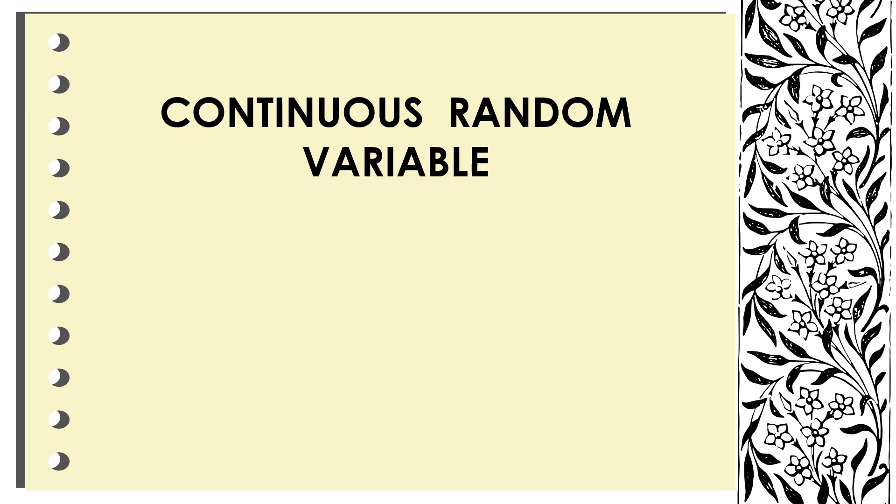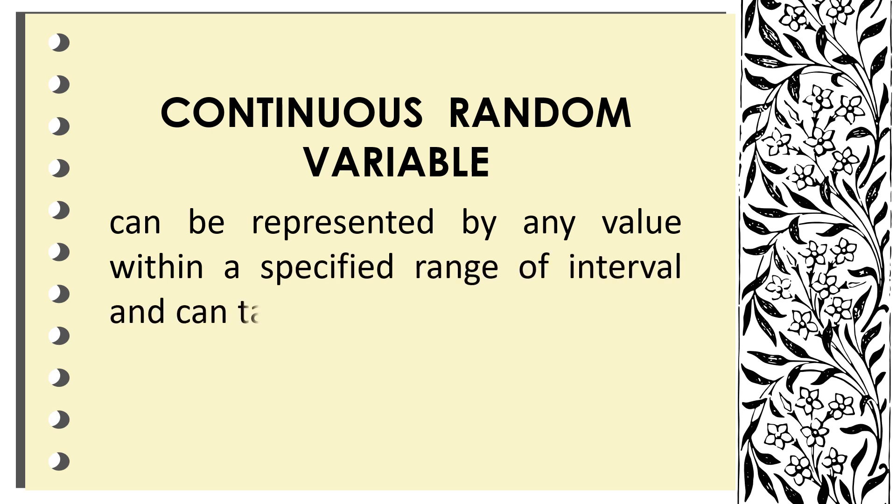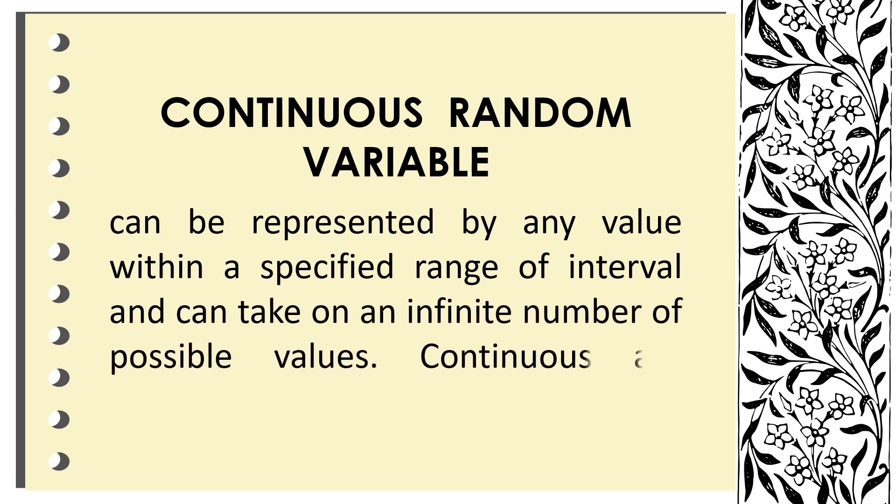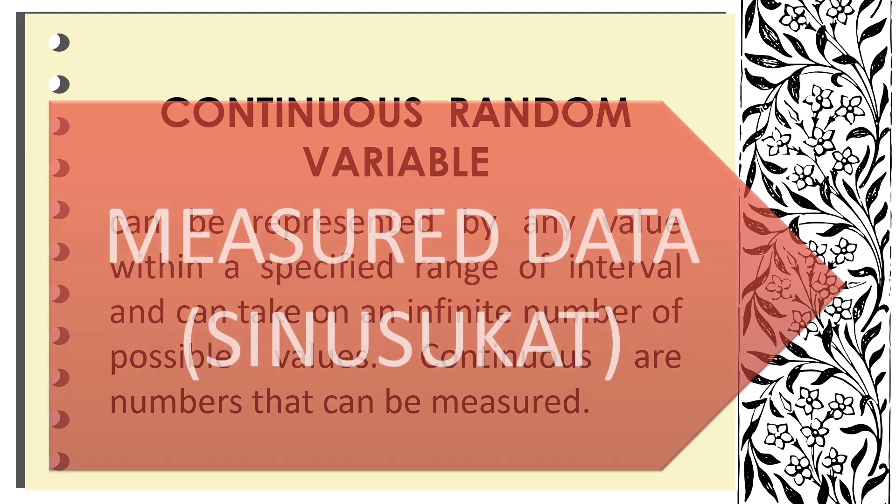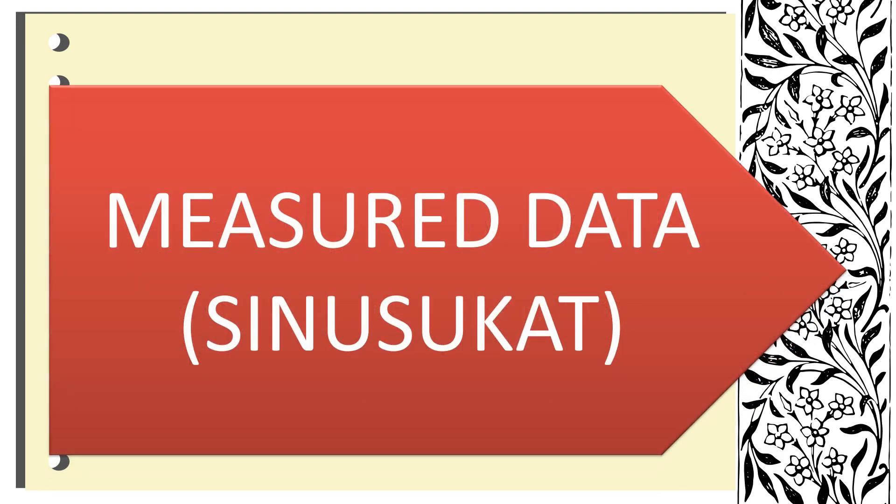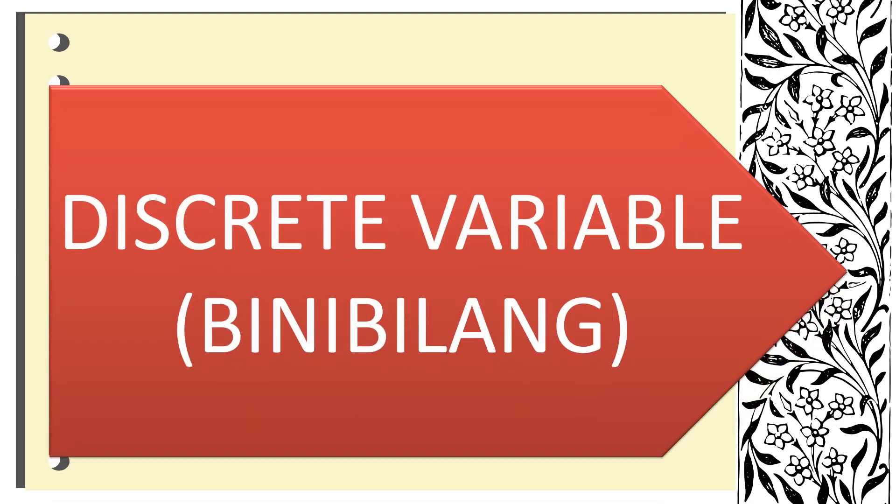The second one is the continuous variable. What is a continuous variable? How is this different from discrete random variable? Well, continuous variable can be represented by any value within a specified range of interval and can take on an infinite number of possible values. Continuous are numbers that can be measured. So, meaning, it is a measured number of distinct values. Continuous variables are numbers that can be measured. It is measured data. In discrete, it is counted.